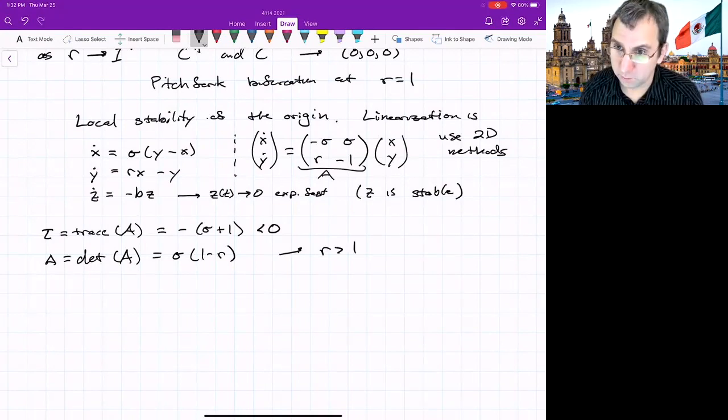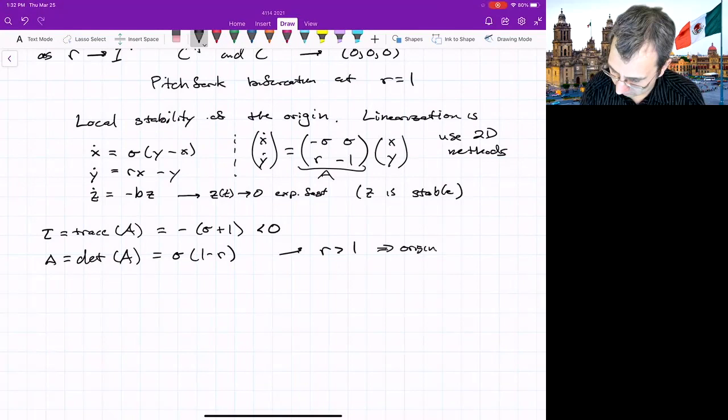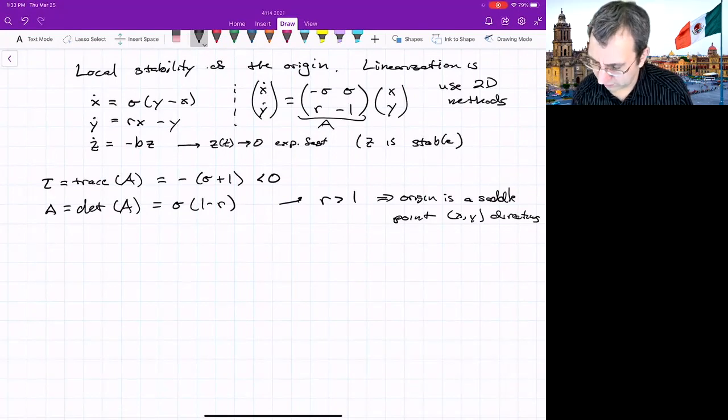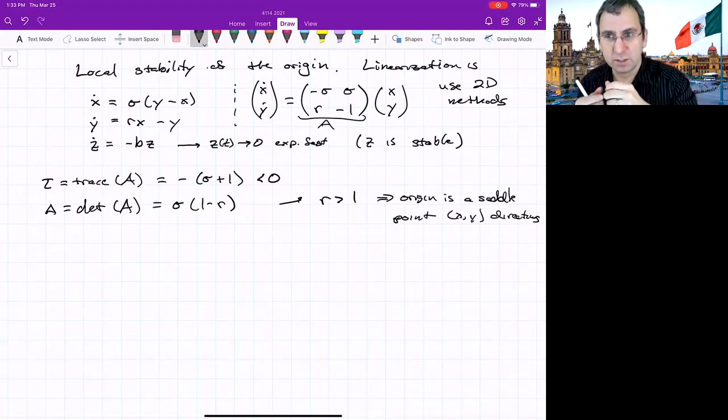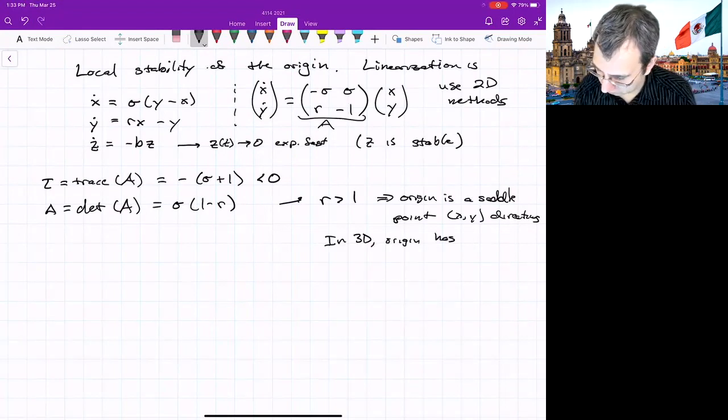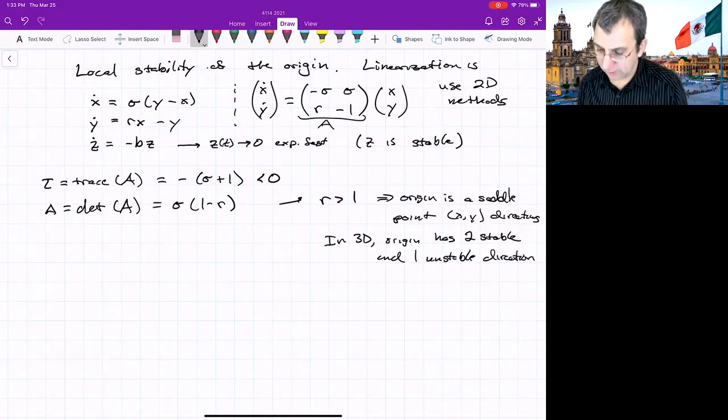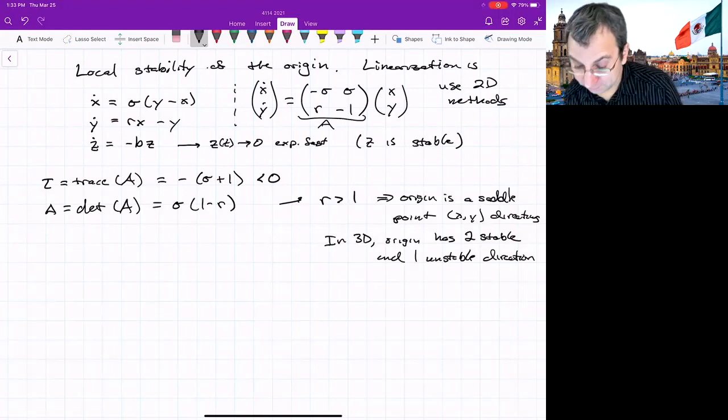If r is greater than 1, we have a delta that's negative. And if you remember from our diagram, this means that for r greater than 1, origin is a saddle point, at least in the x, y directions. We're calling it a saddle point, but what is it really? In x and y, one direction is stable, the other is unstable. So it means in 3D, origin has two stable and one unstable direction. In any case, it's not asymptotically stable for r greater than 1. That's for r greater than 1.